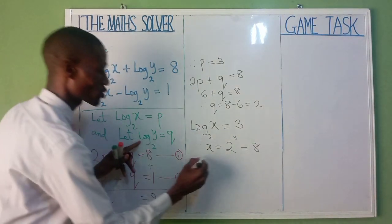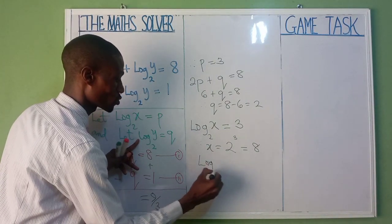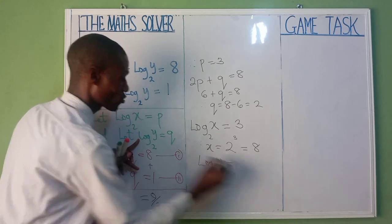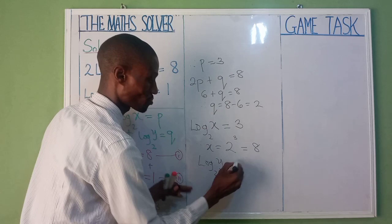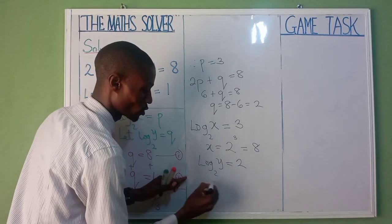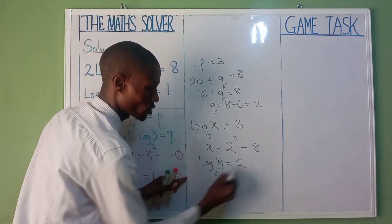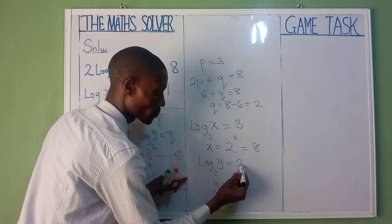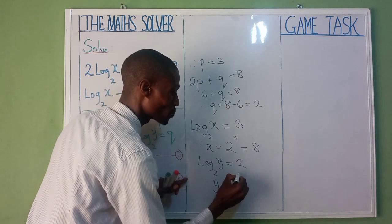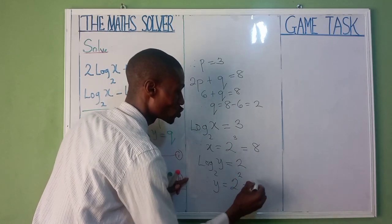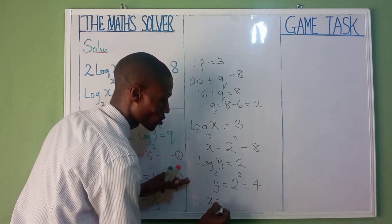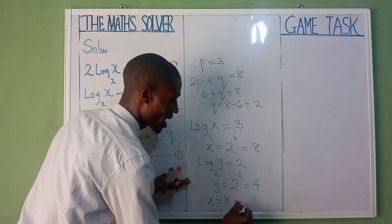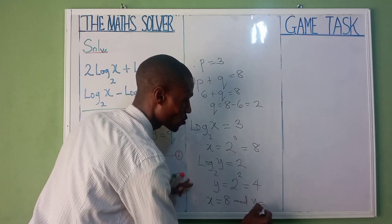Now for our y. We also said log 2y equal to q. And our q here is 2. Therefore, your y equal to, bring your 2 here, this will be the power. It will go up to the power of 2, which is going to be 4. Therefore, your x equal to 8 and y equal to 4.